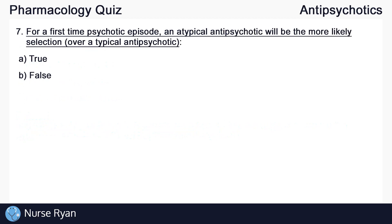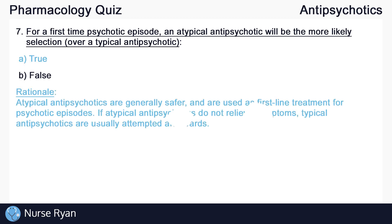Question number seven: for a first-time psychotic episode, an atypical antipsychotic will be the more likely selection over a typical antipsychotic. The answer here is A, true. Atypical antipsychotics are generally safer and are used as first-line treatment for psychotic episodes. If atypical antipsychotics do not relieve symptoms, typical antipsychotics are usually attempted afterwards.